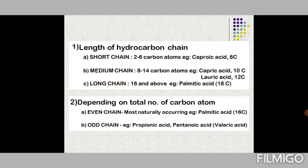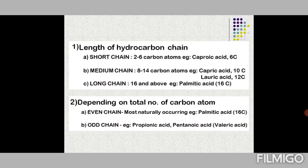Based on total number of carbon atoms, fatty acids can be even-chain or odd-chain. Even-chain fatty acids dominate — a best example is palmitic acid with 16 carbons. An example of an odd-chain fatty acid is valeric acid (also called pentanoic acid), which has 5 carbons.